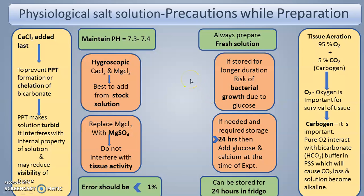Precautions while preparing PSS solution: calcium chloride should be added last. Why? To prevent precipitation formation and chelation of bicarbonate ions. Adding calcium chloride early makes the solution turbid, which interferes with the internal properties of the solution and may reduce visibility of the tissue. If the solution is turbid, you cannot clearly visualize the tissue or obtain a clear recording of whether it is contracting or not.